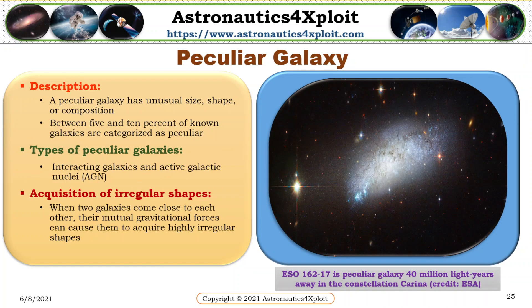A peculiar galaxy has unusual size, shape, or composition. Between 5 and 10 percent of known galaxies are categorized as peculiar galaxies. Interacting galaxies and active galactic nuclei are types of peculiar galaxies. When two galaxies come close to each other, their mutual gravitational forces can cause them to acquire highly irregular shapes. This picture shows ESO 162-17, which is a peculiar galaxy 40 million light years away in the constellation Carina.